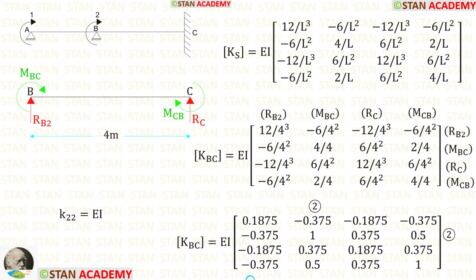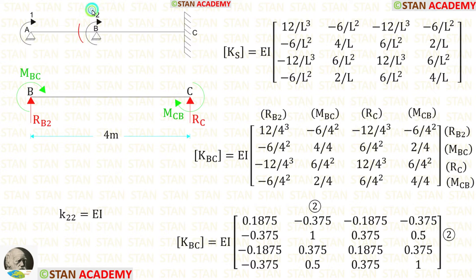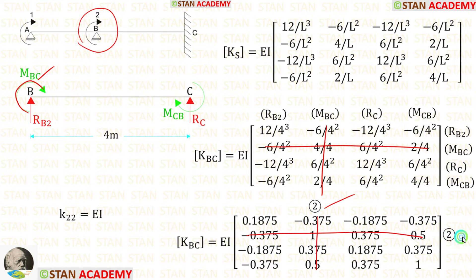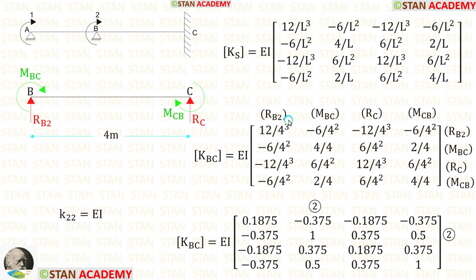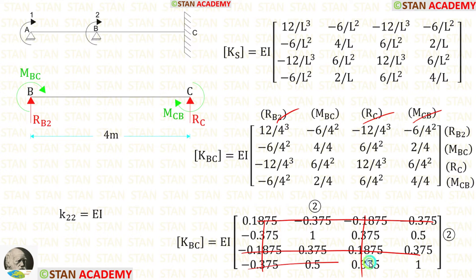Now let us make the stiffness matrix for span BC, with L = 4. At point B we have the second coordinate, and M_BC represents the second row and second column. We strike out the row and column for RB2 (row 1, column 1), and the rows and columns for M_CB (third and fourth rows and columns). Only one value remains: K22 = 1·EI = EI.